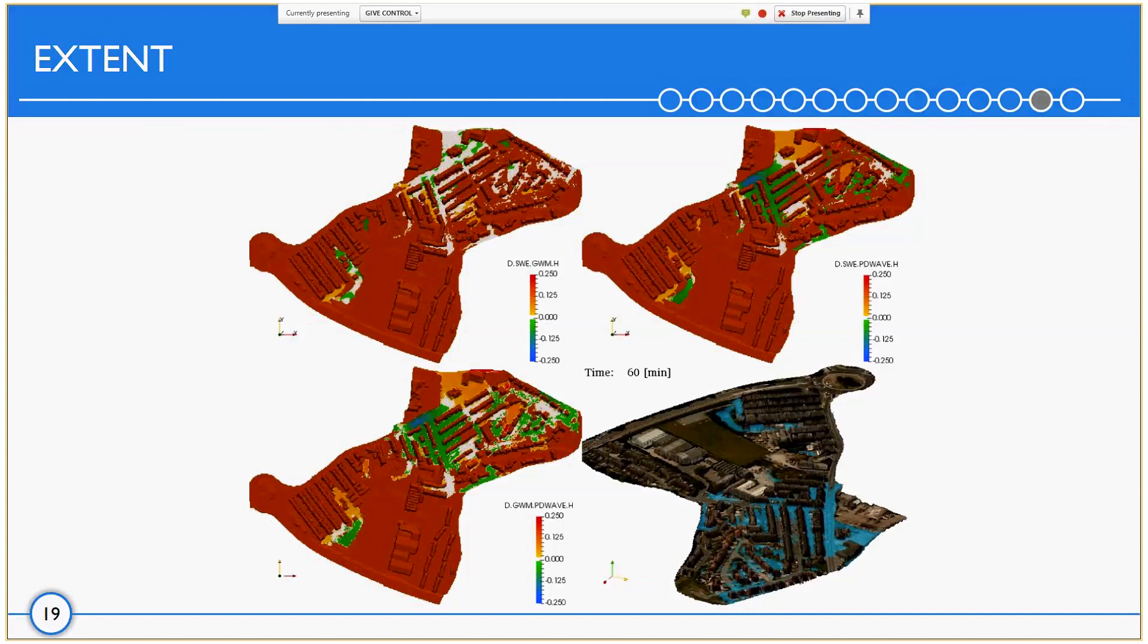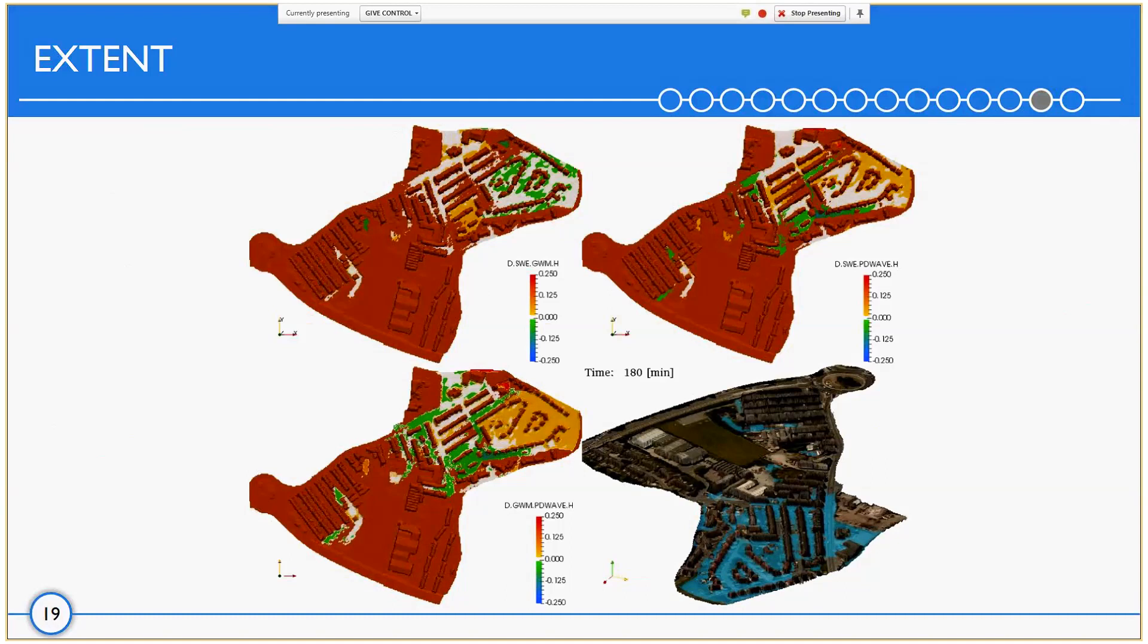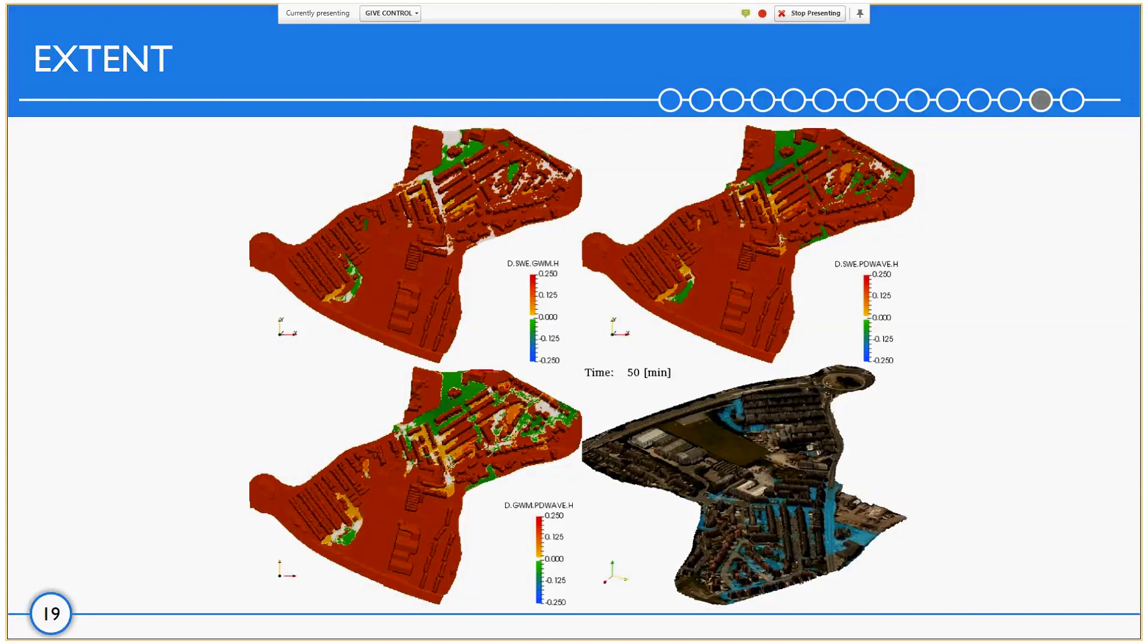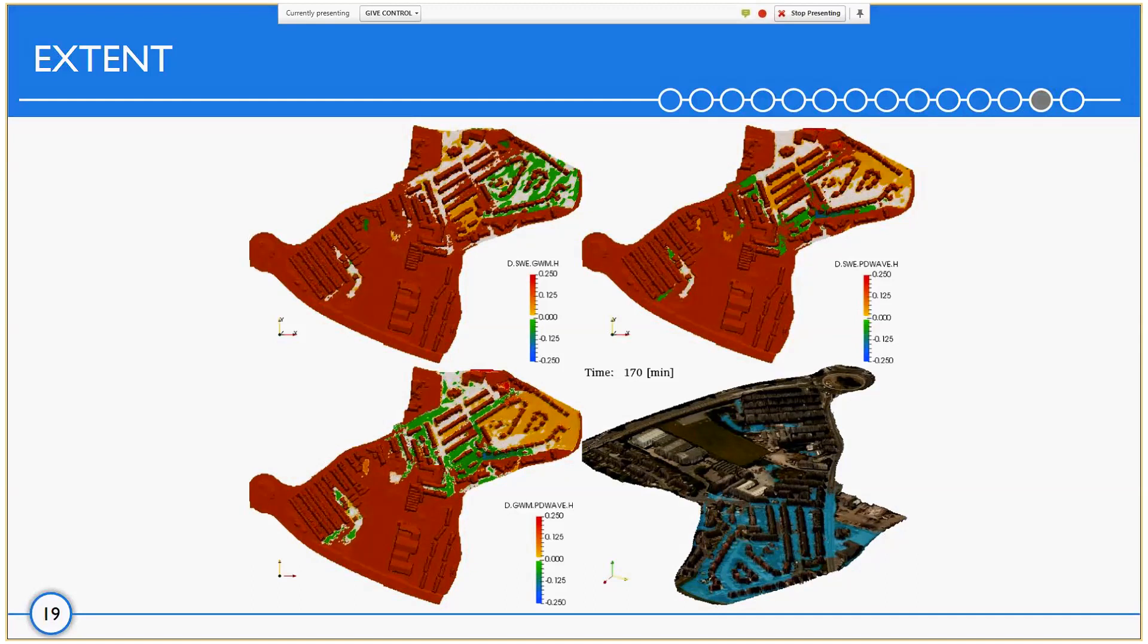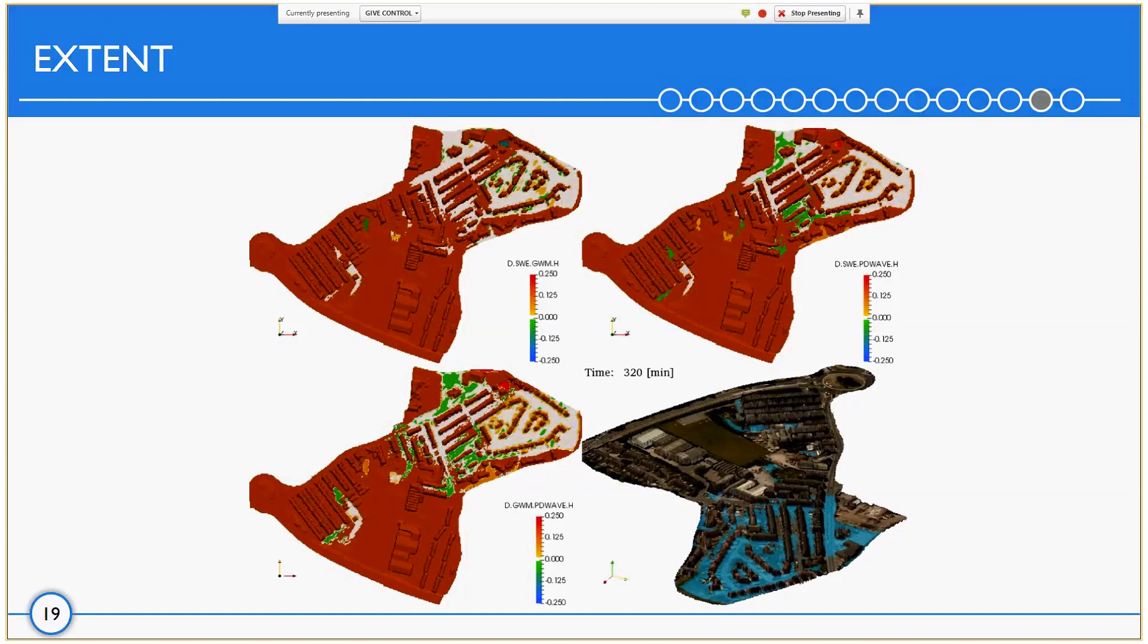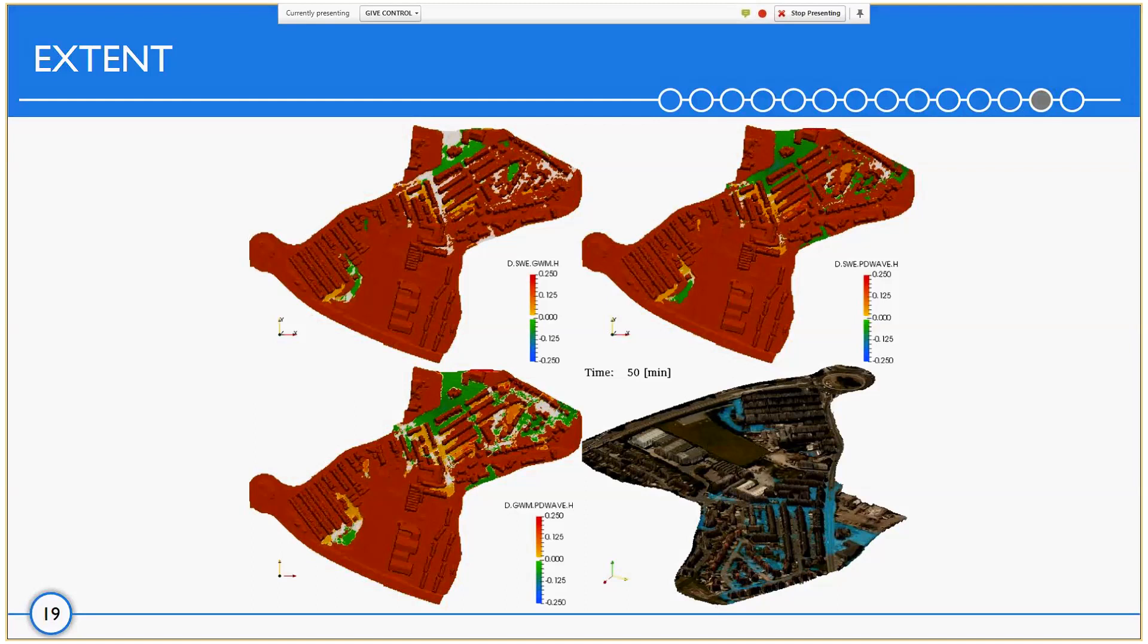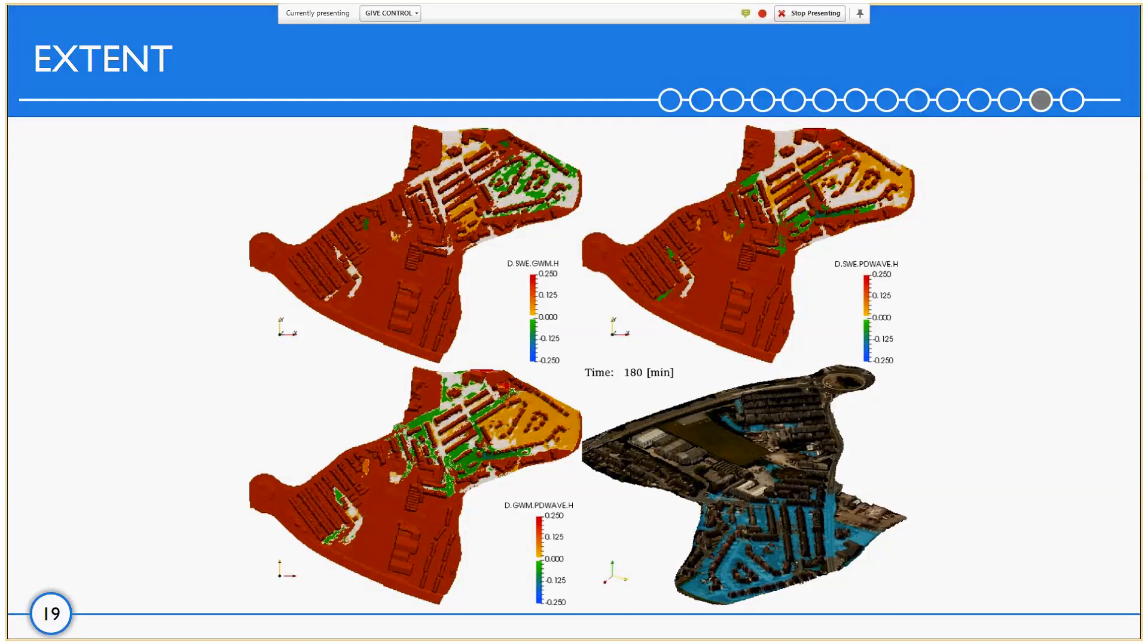So just to have an idea on how the differences propagate, this video shows the difference between all three models. On the first one is the shallow water minus gravity wave model. On the second one is the shallow water minus PD wave. The bottom left one is the gravity wave minus PD wave. And the bottom right is just the extent as shown from the gravity wave model. The differences, even if you don't just consider the maximum extent, but on a time-wise discretization, they are still very low.